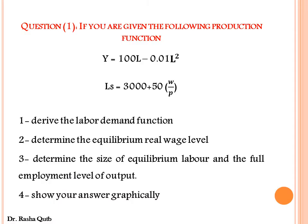First, if you are given the following production function and the labor supply function, the required is to derive the labor demand function by two ways. Number two, determine the equilibrium real wages. Third, determine the size of equilibrium labor and full employment level of output. And finally, show your answer graphically.